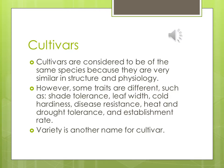Cultivars are considered to be of the same species because they are very similar in structure and physiology. Plants have anatomy — the structure or parts — such as the leaf, crown, blade, and stolon. And they have physiology — how these parts work. You can't have one without the other; structure and physiology are closely related.